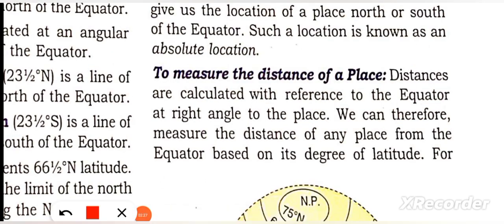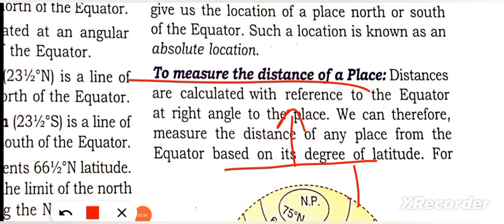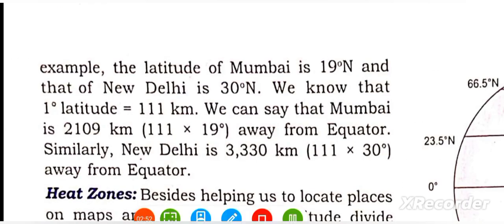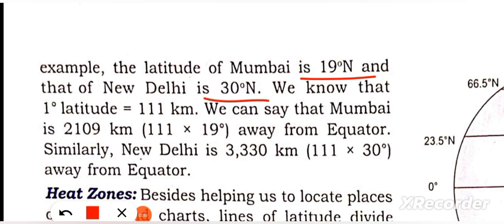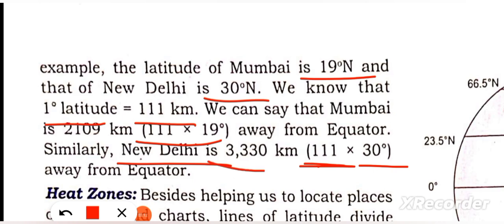For example, if a place is at a certain degree from the equator, you can measure the distance in kilometers. Since 1 degree latitude equals 111 km, if a place is at 30 degrees latitude, multiply 111 by 30 to get 3,330 km. So Delhi's distance from equator is 3,330 km and Mumbai's is approximately 2,109 km.